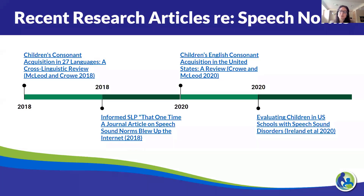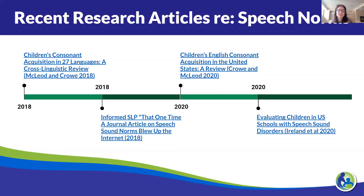If you've heard me speak about this before, you also know that I talked about the Informed SLP article — 'That one time a journal article on speech sound norms blew up the internet' — and that was also in 2018. Marie Ireland had a response basically saying hold on: you still have to show evidence of educational impact or social-emotional impact; it's not just documenting that there's a delay in speech sound acquisition. So she ended up working with Crow and McLeod to do a study of just American English studies — reviewing existing research on speech sound acquisition. For the 2020 article, they reviewed US English-only studies: 15 studies, 18,907 children.